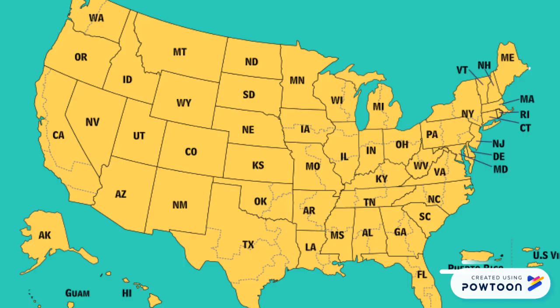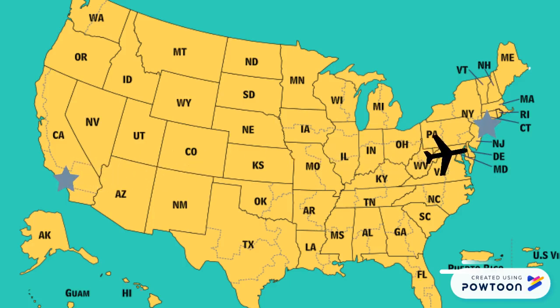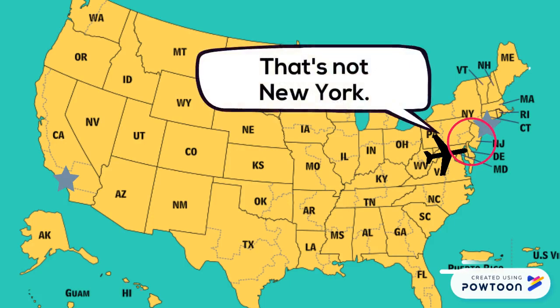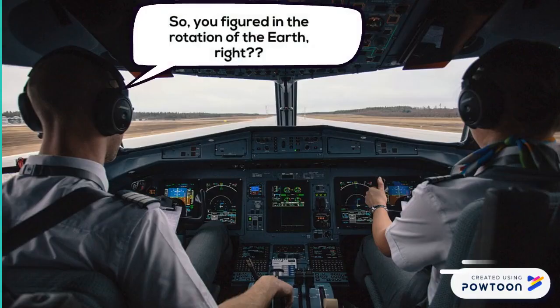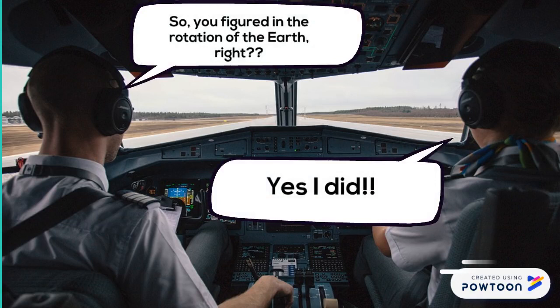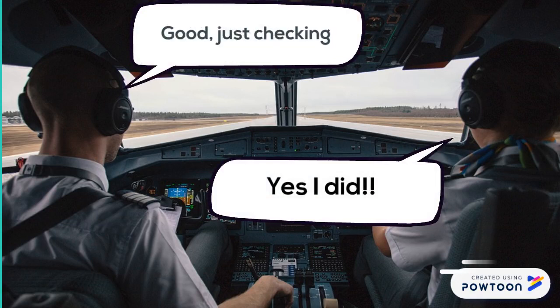Another example. If I was flying a plane from Los Angeles to New York, as I fly across the country, the earth is still rotating under me, and if I make no change, I would wind up landing in New Jersey instead. So even pilots need to figure in the rotation of the earth into their flight paths in order to end up in the correct place.